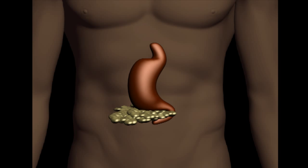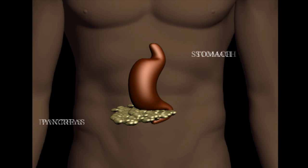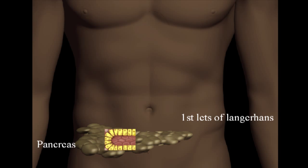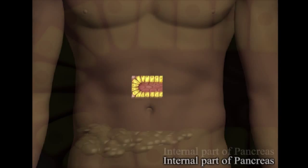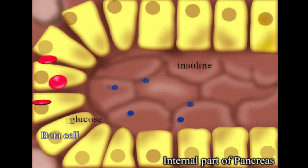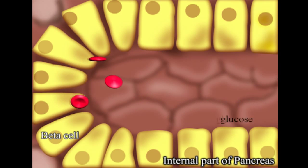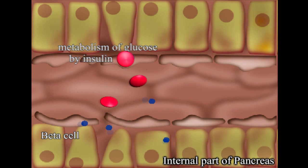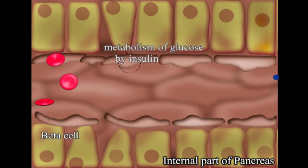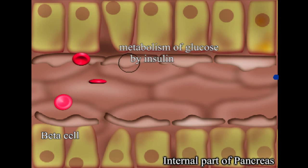The production of insulin in beta cells and metabolism of glucose by insulin in the human body — the production of insulin is done by pancreas gland beta cells, which react to glucose metabolism inside the pancreas gland.